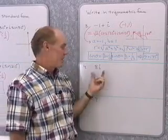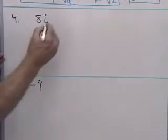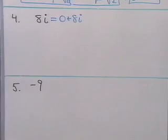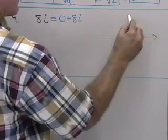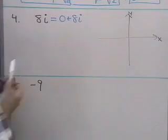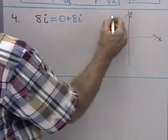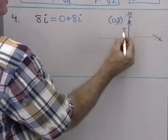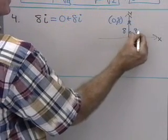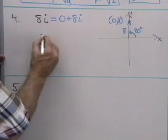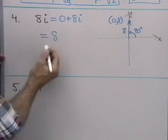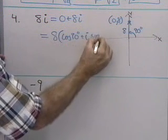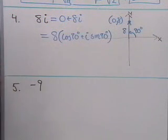How about 8i? The graph of 8i — written as 0 + 8i — goes from the origin out to the point (0, 8). That vector has length 8 and is exactly 90 degrees up from the positive x-axis. So in trigonometric form, the modulus is 8, giving us 8(cos90° + i·sin90°). That's 8i in trigonometric form.